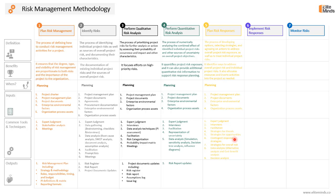Additional tools for plan risk responses include contingent response strategies, data analysis techniques like alternative analysis and cost-benefit analysis, decision analysis techniques, and specifically multi-criteria decision analysis. The outputs of this process will be change requests to update the project management plan, project documents, and performance baselines as per the developed response plans. There will also be updates to project management plan components like schedule, cost, quality resources, procurement, and scope management plan, as well as updates to project documents like the assumption log, risk register, and risk report.